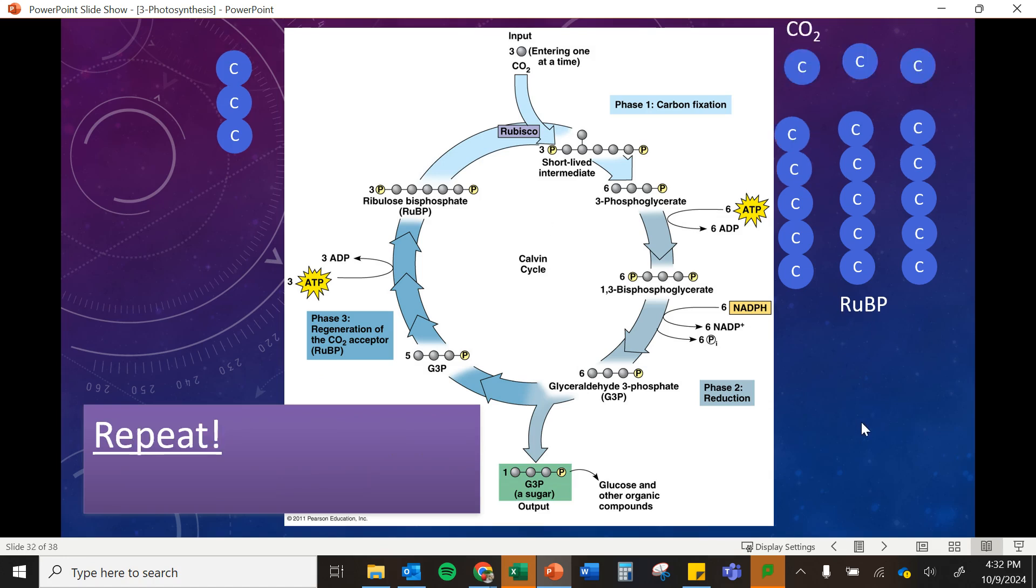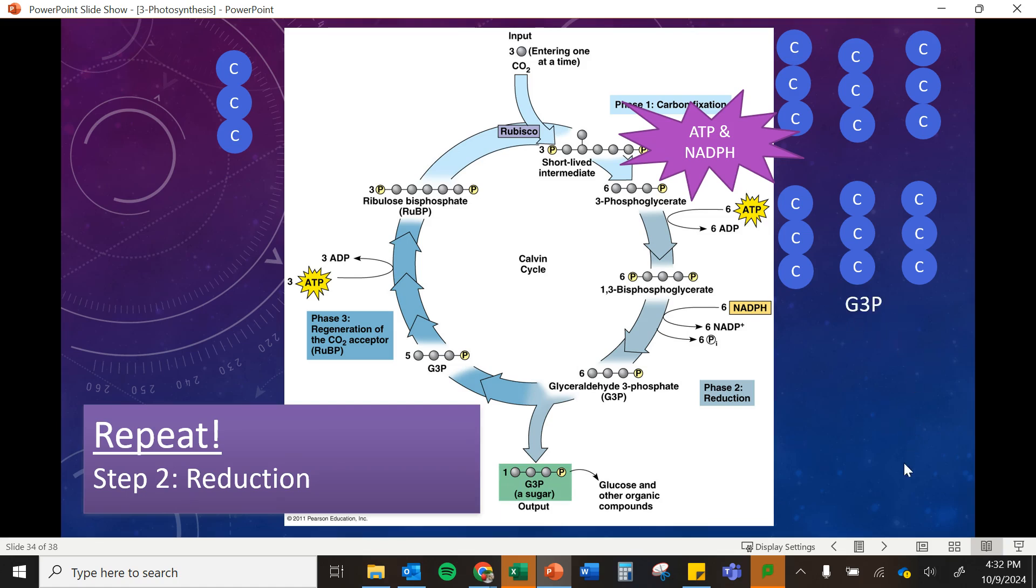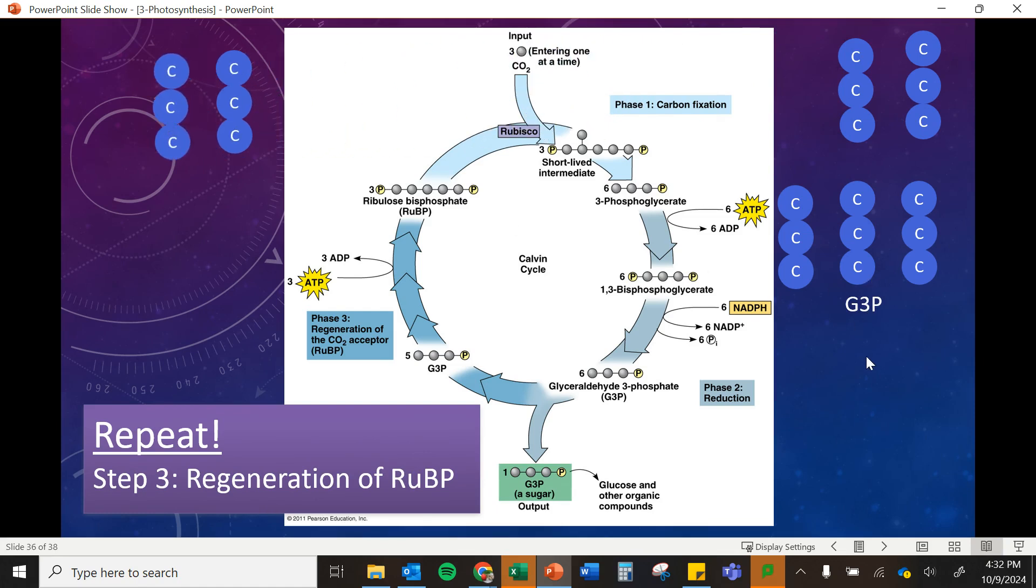And now we have our RuBP. We can do the cycle again. And that's what happens. We get more carbon dioxide. We add it onto our RuBP. It immediately falls apart. We use NADPH and ATP to turn that into G3P. Then we now have a G3P that we put to the side and these other ones are regenerated back into our RuBP. That is the story of the Calvin cycle.